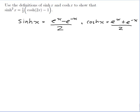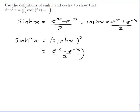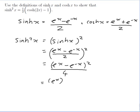I just need to show that sinh squared x is equal to half of cosh 2x minus 1, so I should write down what sinh squared x is and see what I can do from there. Sinh squared x would be sinh x all squared, which would be e to the x minus e to the minus x over 2, squared — that gives e to the x minus e to the minus x, all squared, over 4, which expands to e to the x squared minus 2 e to the x times e to the minus x plus e to the minus x squared, all over 4.